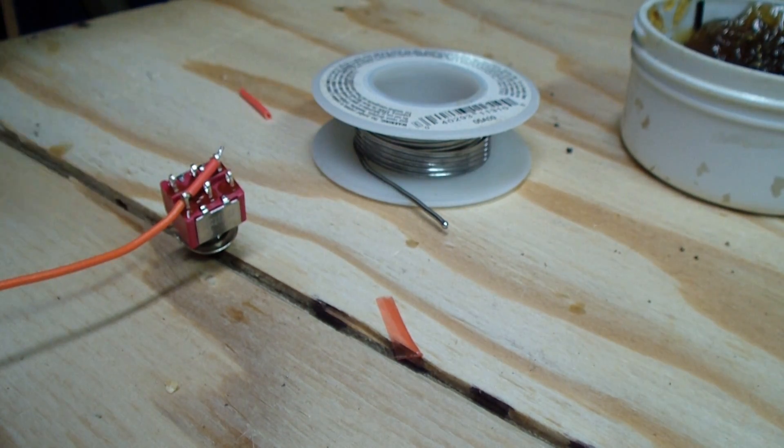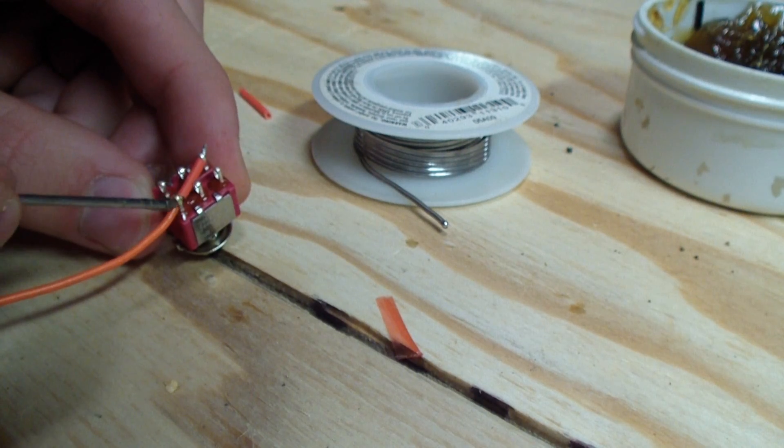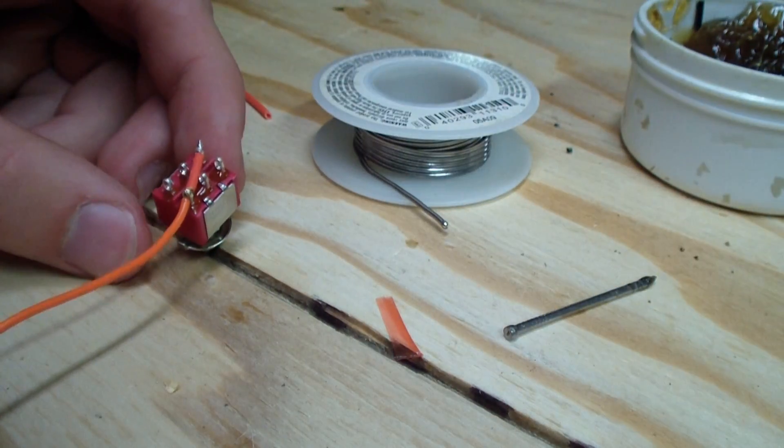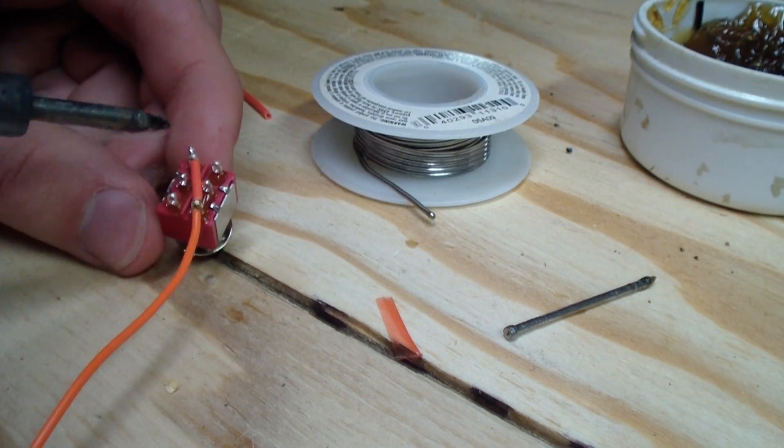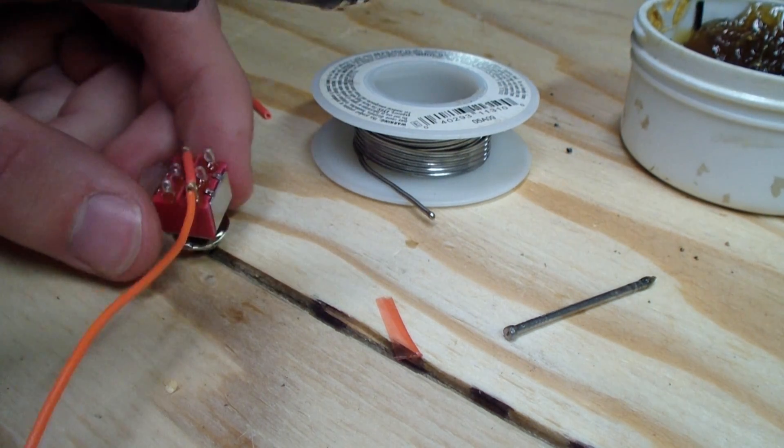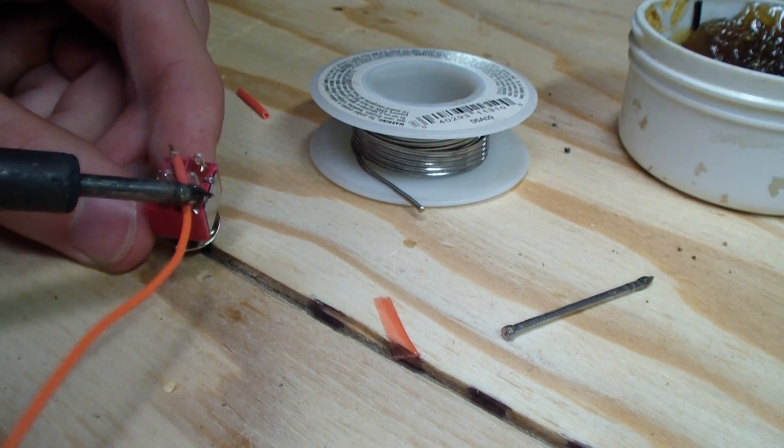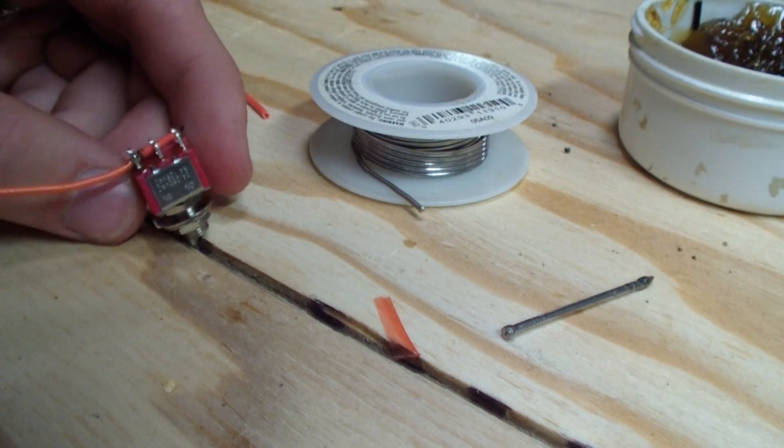Go ahead and solder both ends of this here to the wire to make sure it doesn't go anywhere. You want to be very careful not to heat it up too much or else you'll melt the contacts and the plastic in the throw. That should be good there.